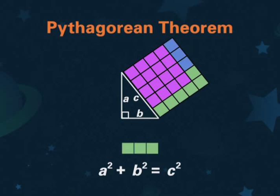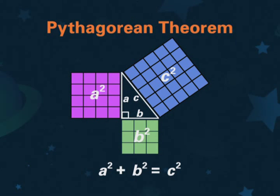Amazing! A squared plus B squared equals C squared.